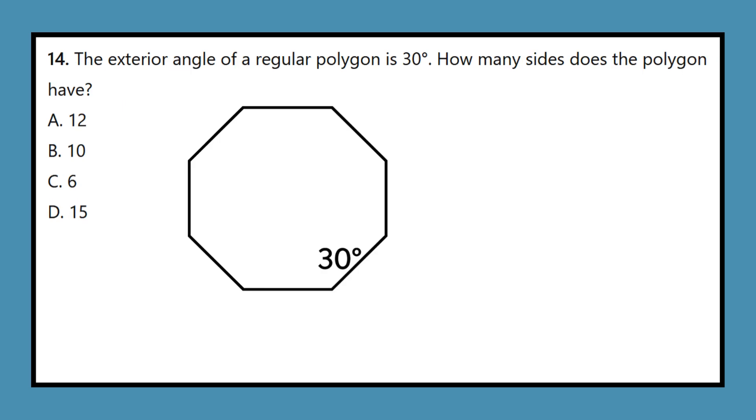Question 14: The exterior angle of a regular polygon is 30 degrees. How many sides does the polygon have? A. 12, B. 10, C. 6, D. 15.